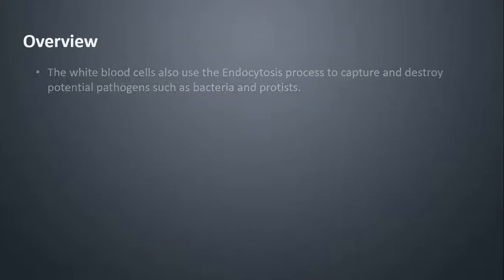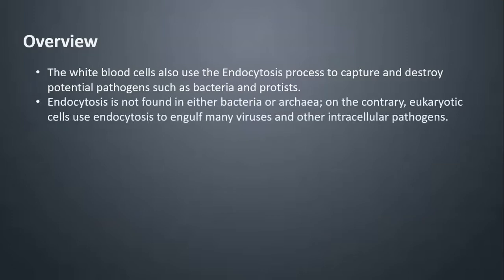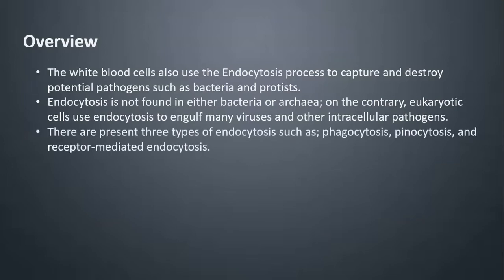The white blood cells also use the endocytosis process to capture and destroy potential pathogens such as bacteria and protists. Endocytosis is not found in either bacteria or archaea; on the contrary, eukaryotic cells use endocytosis to engulf many viruses and other intracellular pathogens. There are three types of endocytosis: phagocytosis, pinocytosis, and receptor-mediated endocytosis.